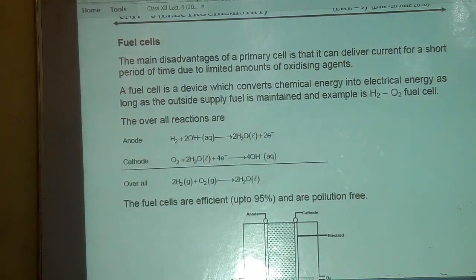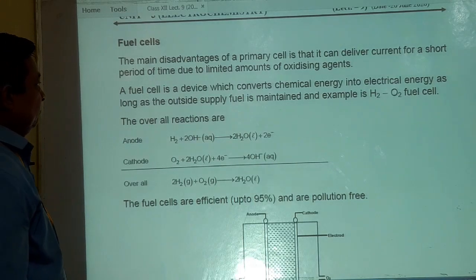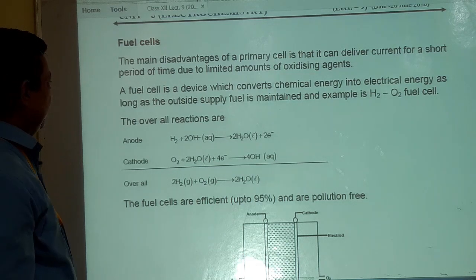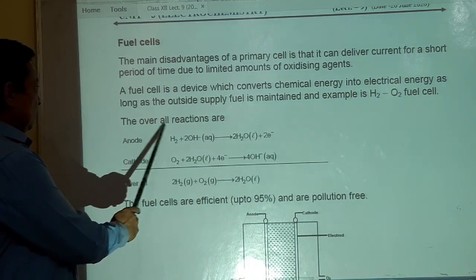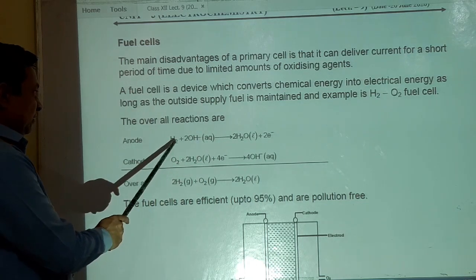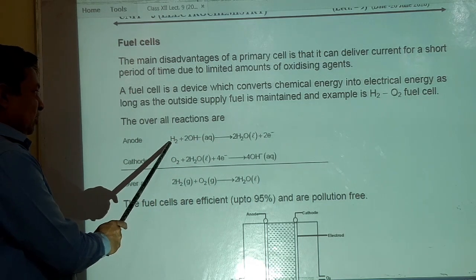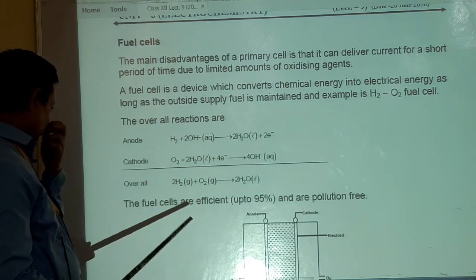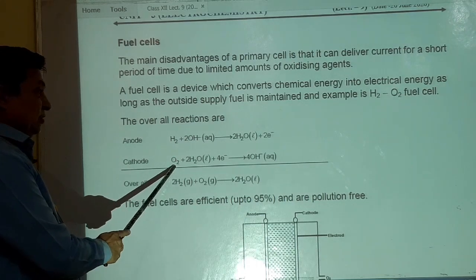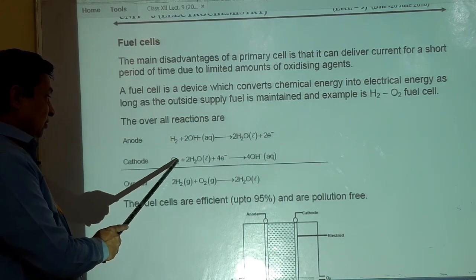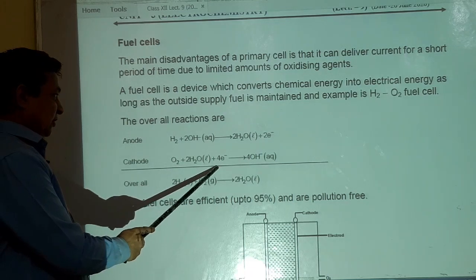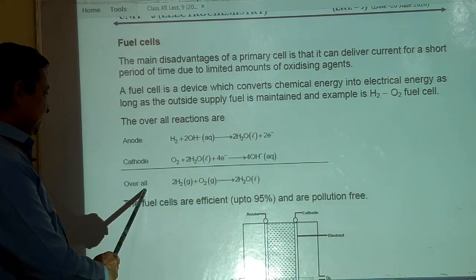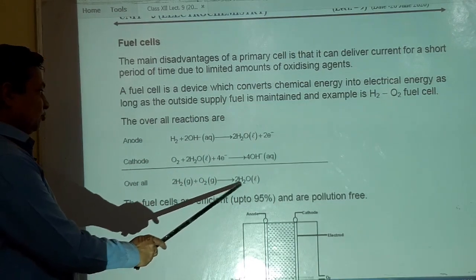Fuel cell में जब तक fuel की supply maintained रखेंगे तो वो chemical energy को convert करता रहेगा electrical energy में. The overall reactions are: anode पर oxidation हो रहा है hydrogen का. H2 plus 2OH minus gives 2H2O plus 2 electrons. और cathode पर reduction oxygen का. O2 plus 2H2O plus 4 electrons gives 4OH minus.